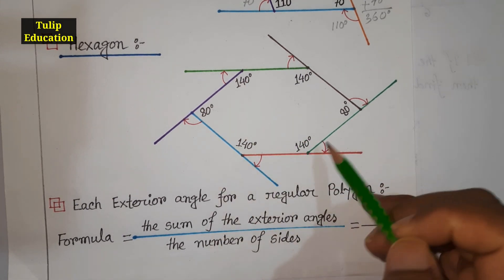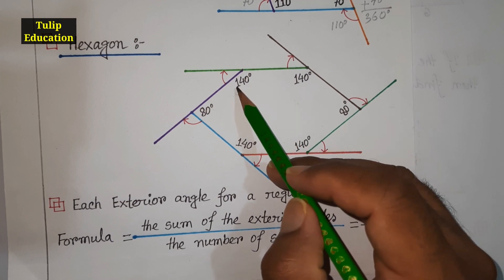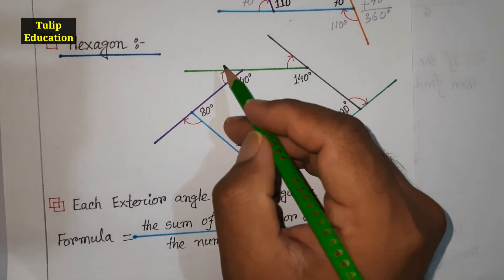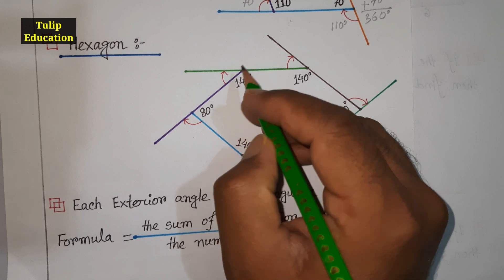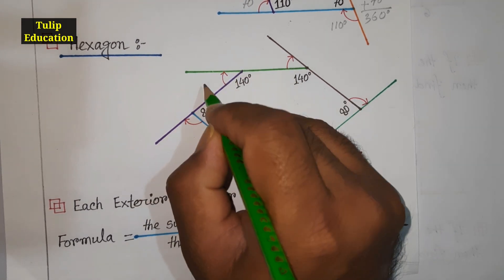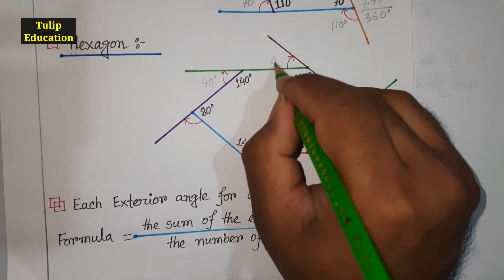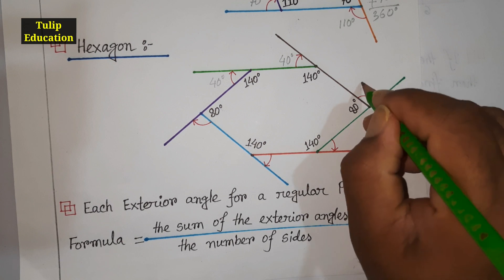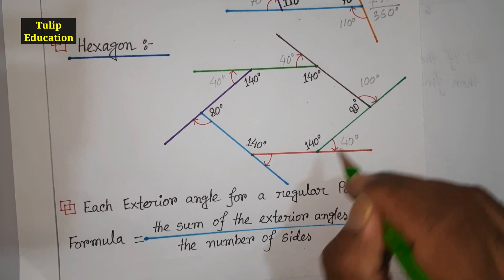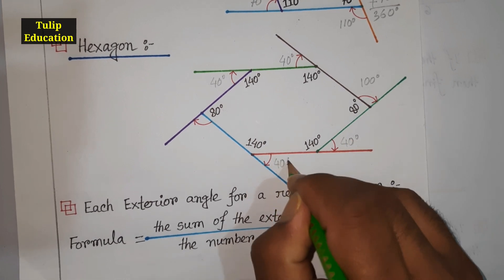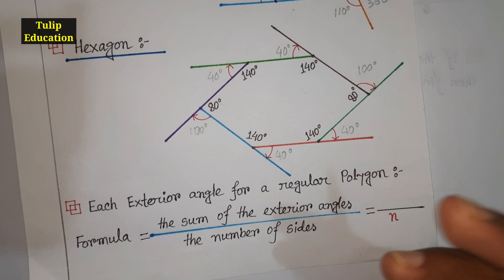I measured the interior angles of this hexagon. One interior angle is 140°, so the exterior angle is 180° − 140° = 40°. The exterior angles work out to: 40°, 100°, 40°, 40°, 40°, and 100°.